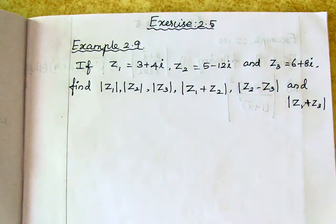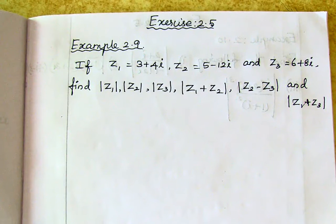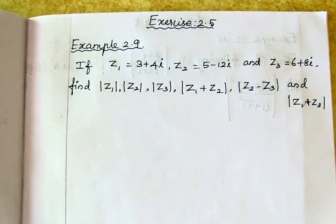Example 2.9: If z1 is equal to 3 plus 4i, z2 is equal to 5 minus 12i, z3 is equal to 6 plus 8i. Find modulus of z1, modulus of z2, modulus of z3.